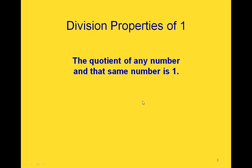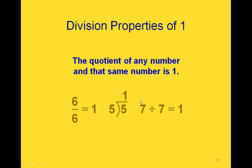The division properties of 1: the quotient of any number and that same number is 1. What that means is that if we divide any number by itself, we get 1. So 6 divided by 6 is 1, 5 divided by 5 is 1, and 7 divided by 7 is 1.